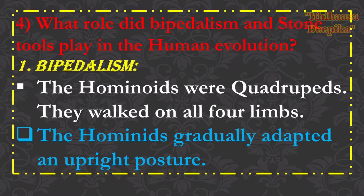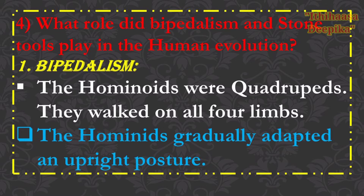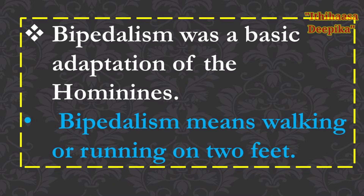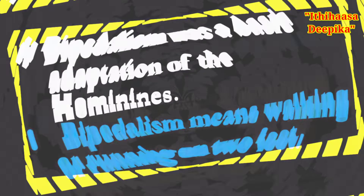Question: What role did bipedalism and stone tools play in human evolution? The hominids were quadrupeds — they walked on all four limbs. But the hominids gradually adopted an upright posture. Bipedalism was a basic adaptation of hominids, meaning walking or running on two feet.